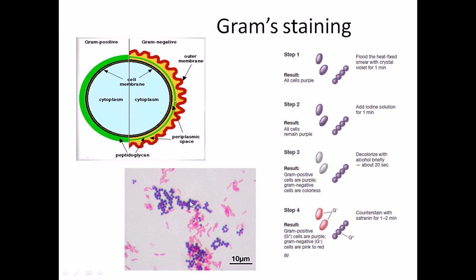This process was developed by a scientist and is named after him — gram staining — so always write 'gram' with a capital G, as it is a person's name, not a unit of measurement. That's the principle of gram staining and that's how it's done.